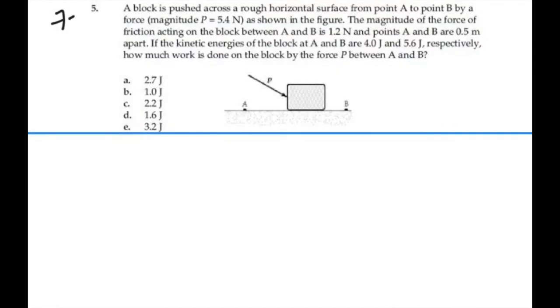Here's problem 7-5. A block is pushed along a rough horizontal surface from point A to point B by a force, magnitude P equal to 5.4 newtons, as shown in the figure.